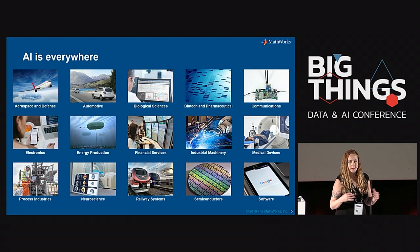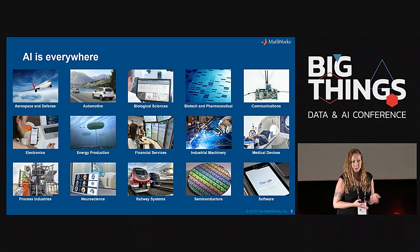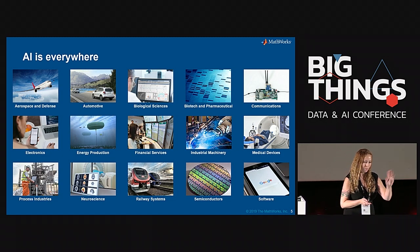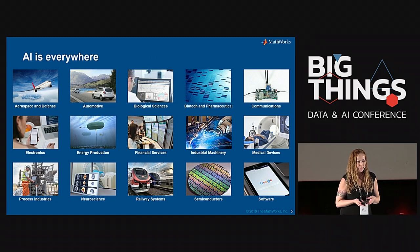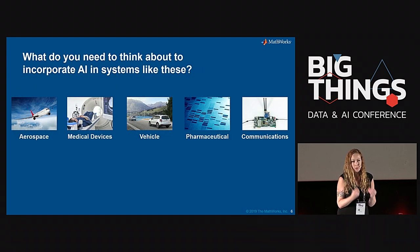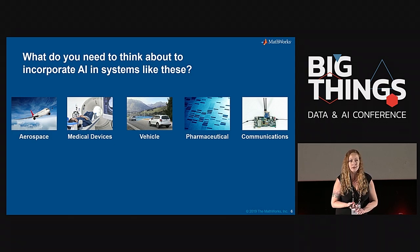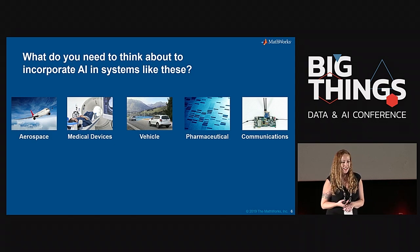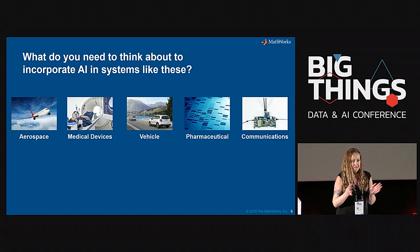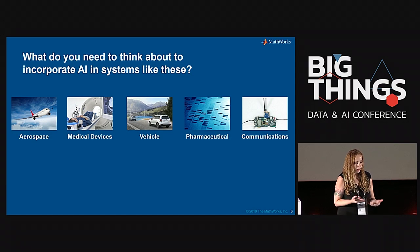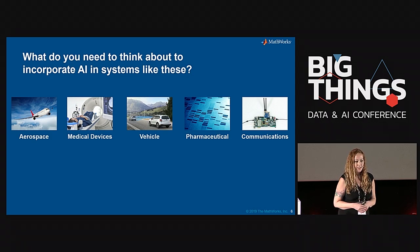AI is all over the place and people really want to incorporate these things into real systems — like a plane landing on its own, or a car stopping. Those of you that raised your hand might have built recommender systems, taxi data analysis, or airline data analysis. But the impact of an error isn't too bad — maybe I got the wrong movie, you just turn it off. But what happens when that fails and the brakes don't work and somebody gets hurt? There are so many things to think about in these kinds of systems.